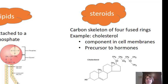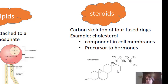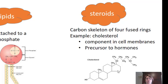The third group of lipids is steroids — a carbon skeleton of four fused rings. The rings can be hexagons like three of them here, or pentagons. Our main example of steroids we're responsible for knowing is cholesterol, because it is the main component in cell membranes and also a precursor to hormones.